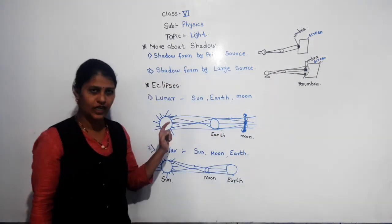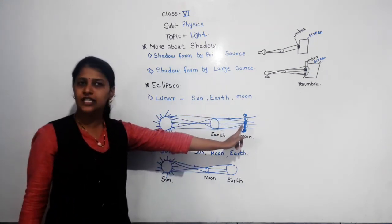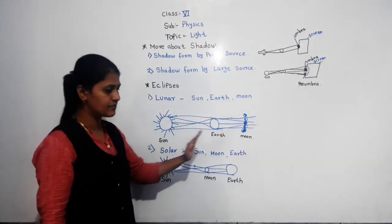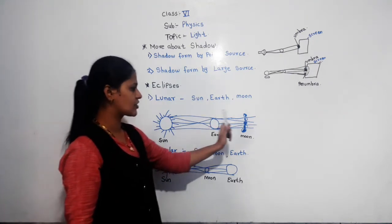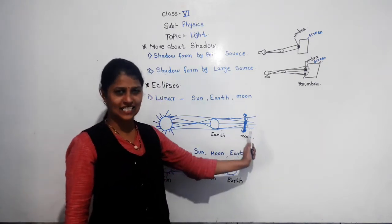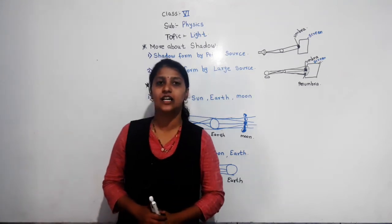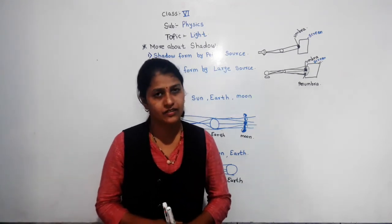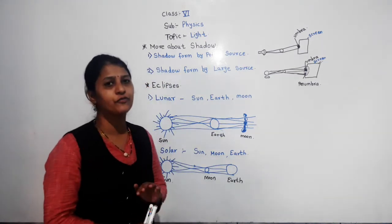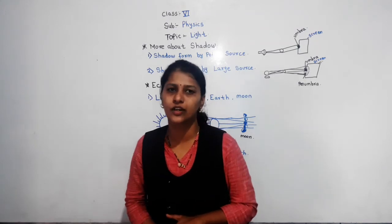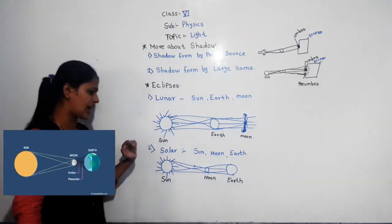To recap: during a lunar eclipse, the Sun, Earth, and Moon come in a straight line, and the Earth casts a shadow on the Moon. This is a lunar eclipse. The next phenomenon is the solar eclipse, which is also a natural formation of a shadow.